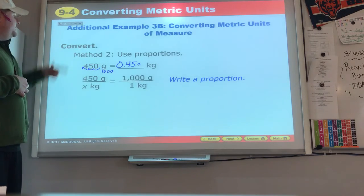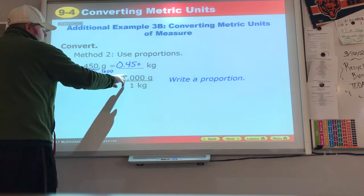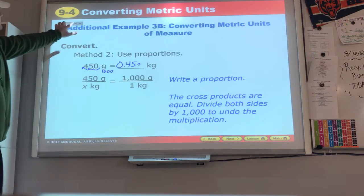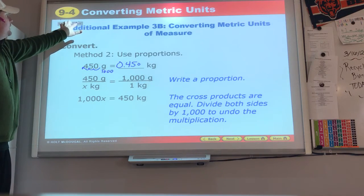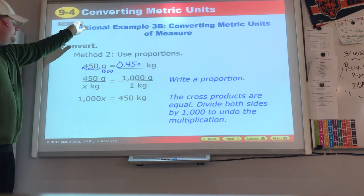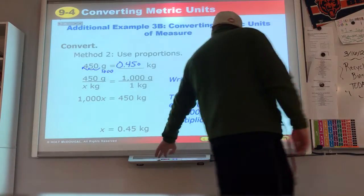They're going to put this problem in. They do this. 45 grams, 1,000 grams over one. They're going to cross multiply and you'll see 450. We divide by a thousand, divide by a thousand, and we get 0.45, just like we had up there before.